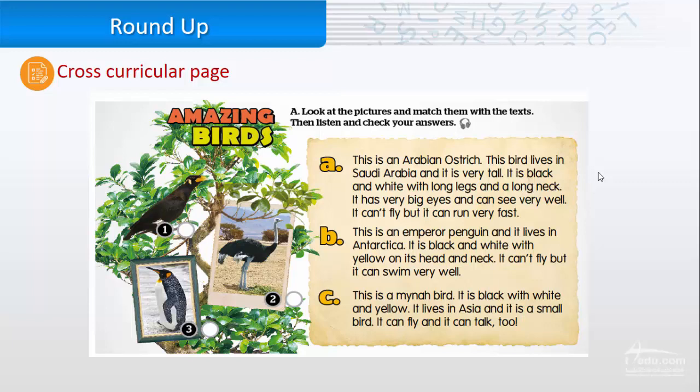B. This is an emperor penguin and it lives in Antarctica. It's black and white with yellow on its head and neck. It can't fly, but it can swim very well.